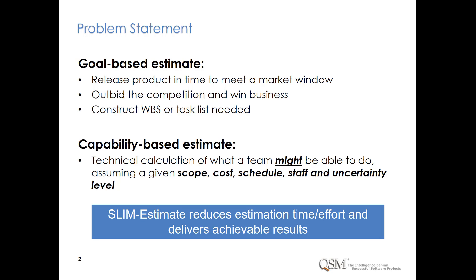Typical projects overrun their estimated schedules and budgets for the following reasons: unrealistic estimates that exceed current capabilities, not estimating scope or the volume of delivered features, failure to re-estimate when scope creep occurs, or not understanding the consequences of adding staff to reduce schedule. In this video, we will show how empirically based estimation tools like SLIM Estimate can reduce estimation time and effort and deliver achievable estimates grounded in actual performance data from real projects.